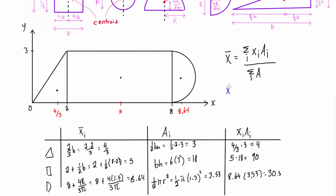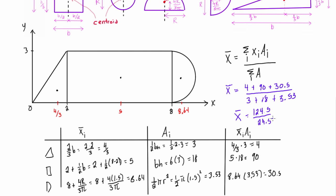Now we plug everything into the formula. The sum of the x_i × A_i products is 4 + 90 + 30.5 = 124.5. The total area is 3 + 18 + 3.53 = 24.53. So x̄ = 124.5 / 24.53 ≈ 5.08 units. The centroid of the entire composite shape is located at x = 5.08.